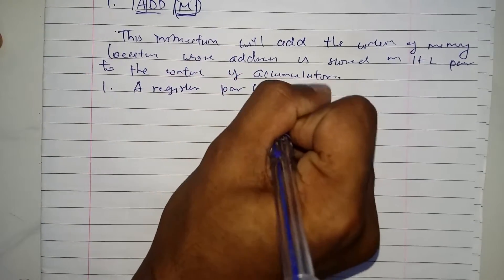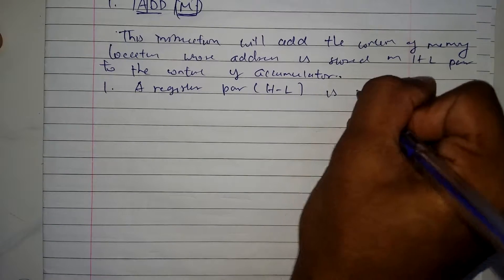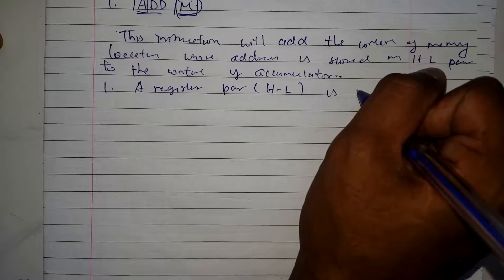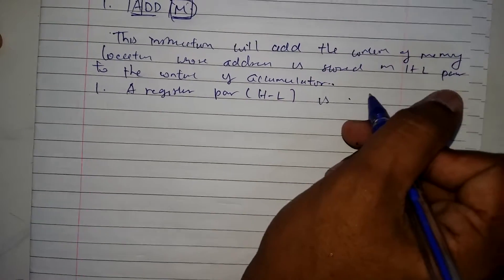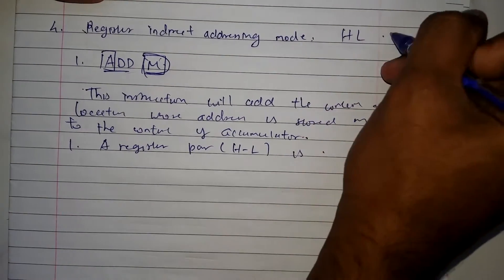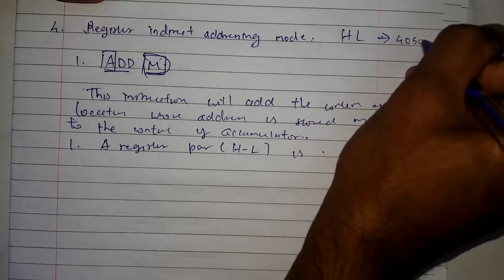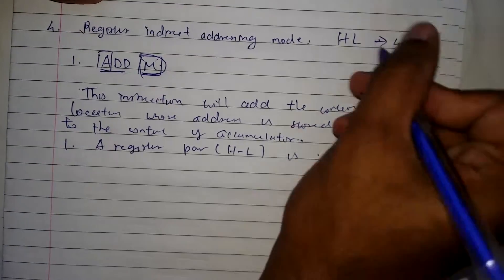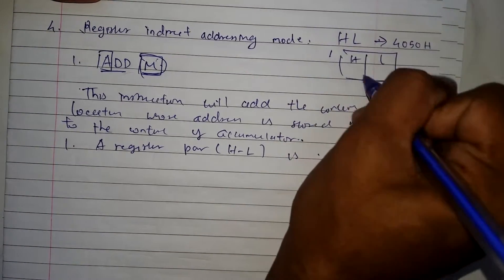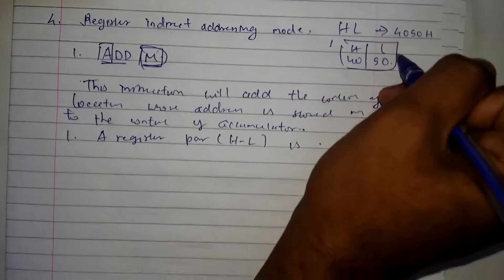16-bit address of memory location. Now the HL pair points to a, this is the HL pair and this suppose points to a memory location 4050H. So it is stored as HL 4050, okay.